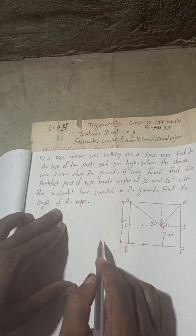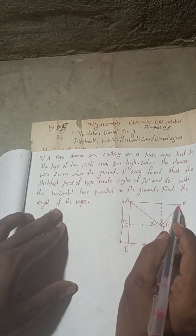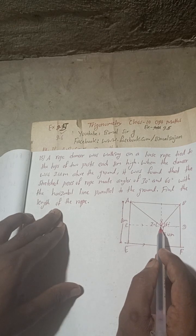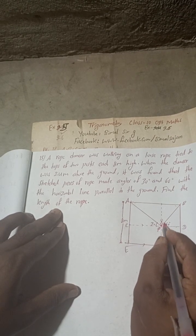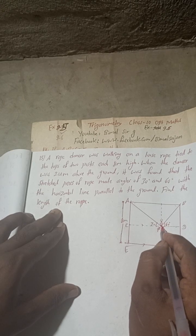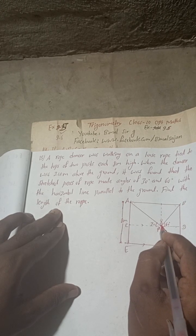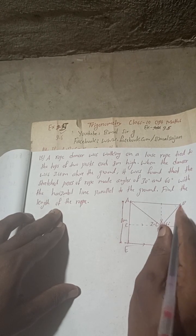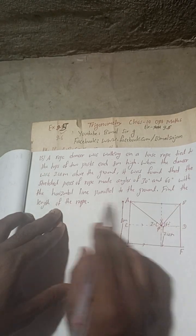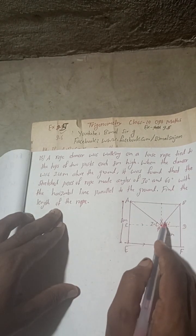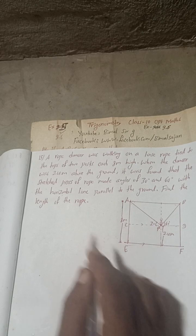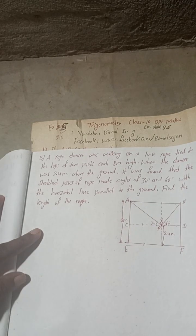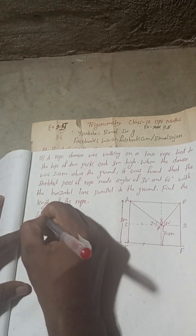Now we have to find the length of the rope. A and B are the tops of the poles. When the dancer is at point P, the rope is stressed and in this shape, so the length of the rope is AP plus BP. This is a long explanation, but I want to make it clear. Now let's begin the solution with this diagram.